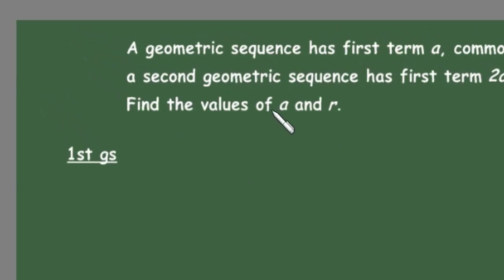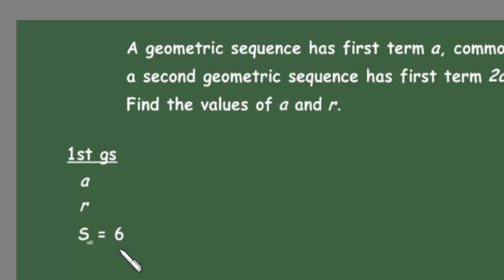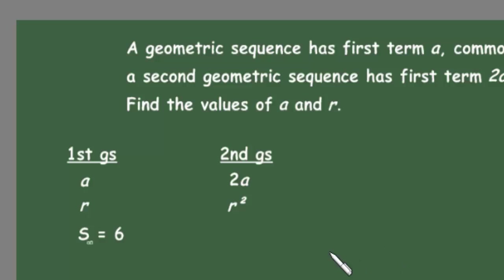Let's briefly interpret the information given. The first geometric sequence has first term a, common ratio r, and sum to infinity S∞ = 6. The second geometric sequence has first term 2a, common ratio r squared, and sum to infinity S∞ = 7.